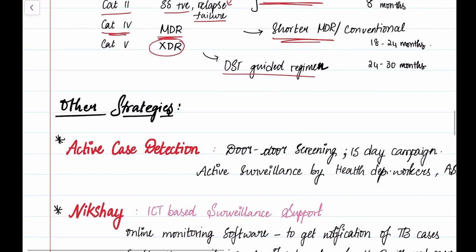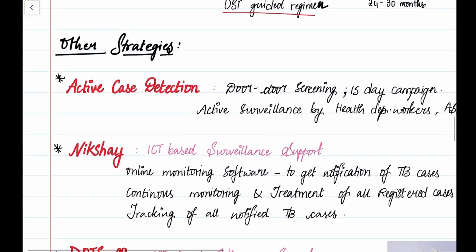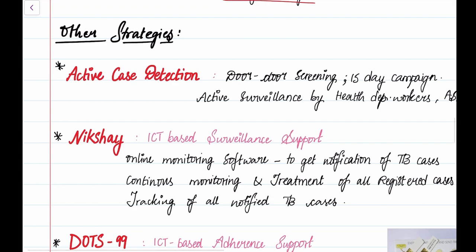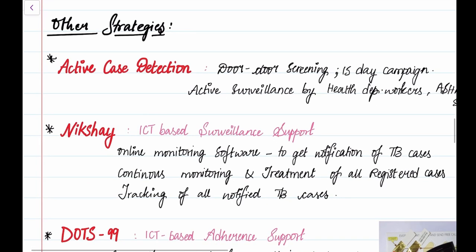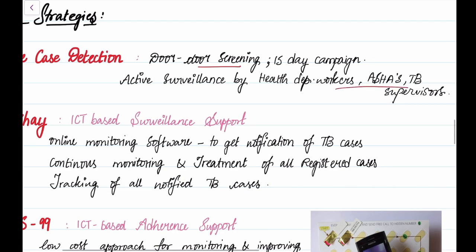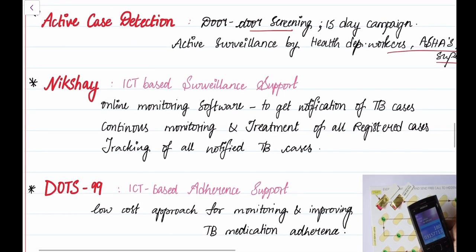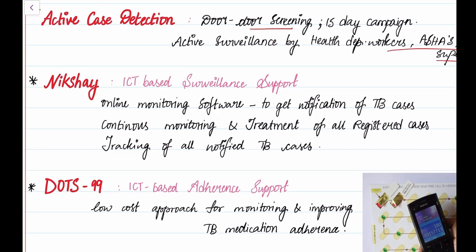What are the other strategies? We are done with the big chunk of the program, that is early diagnosis and treatment. First one is active case detection where there is door-to-door screening done by health department workers, ASHA workers, and supervisors. It's a 15-day campaign where these surveillance people do door-to-door screening for TB.